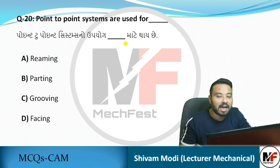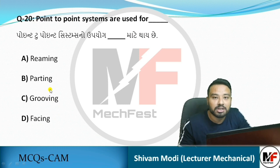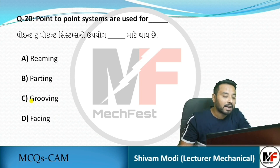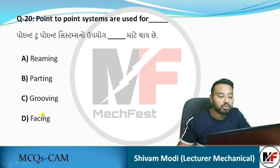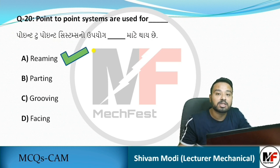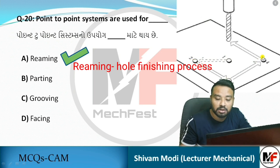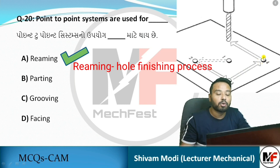Next MCQ: Point-to-point systems are used for which machining process? The options include reaming, parting, grooving, and facing. Parting, grooving, and facing are lathe machine processes, while reaming is a drilling machine process. Always remember: point-to-point systems are used with drilling machines. As shown in the figure, in point-to-point, first a hole is made at point one, then at point two, then point three, then point four. So point-to-point systems are used for drilling/reaming. The answer is reaming.